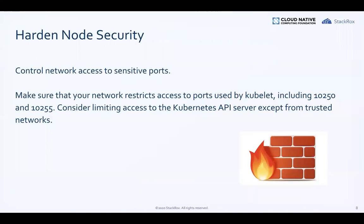Getting into the nuts and bolts of securing Kubernetes itself: make sure you control network access to sensitive ports. Restrict the ports used by the kubelet — there have been cases where the kubelet was exposed externally and people exploited that. Also, limit access to the Kubernetes API server itself. You can restrict it to IP blocks, VPN, or have it be internal to your cloud provider. There was a recent vulnerability where an anonymous user could DDoS your API server, so having it be internal knocks out a lot of potential perpetrators.